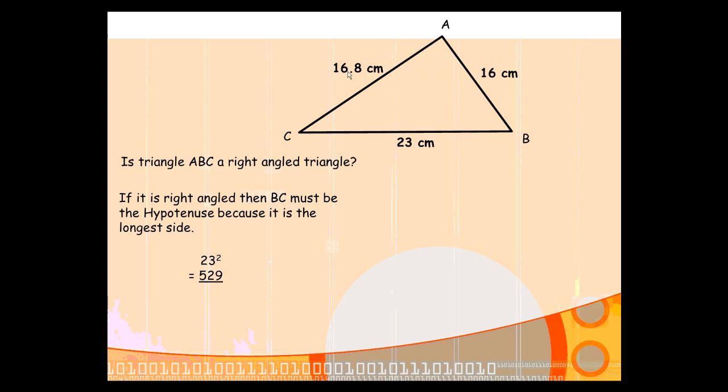We then take the two shorter sides, we find the sum of the square of them. You take each side, square it, add it up together, and you find that your answer is 538.24.